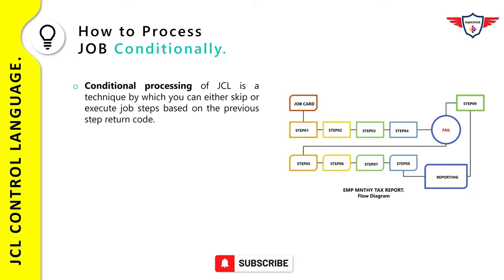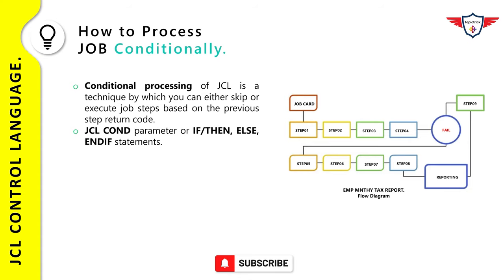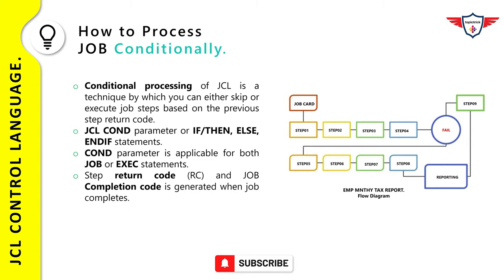Let me quickly summarize the important points discussed so far. First, conditional processing of JCL is a technique by which you can either execute or skip a job step based on the previous step's return code. Second, you can use either the JCL COND parameter or an IF THEN ELSE statement to process jobs conditionally. Third, you can use the JCL conditional parameter on both the EXEC statement and the JOB statement. There are two important terms to remember: step return code and job completion code. A step return code is issued for every job step that is executed.